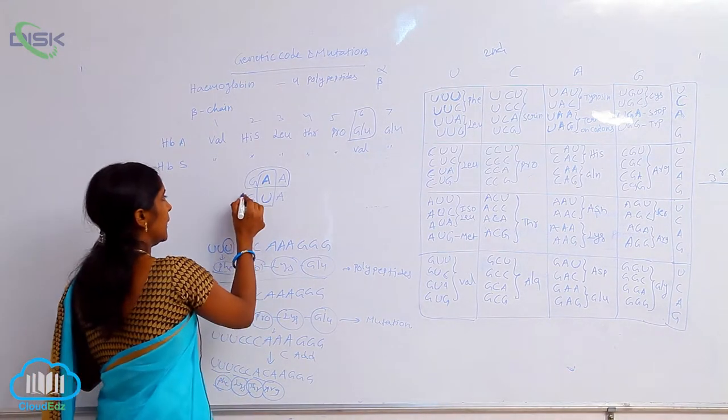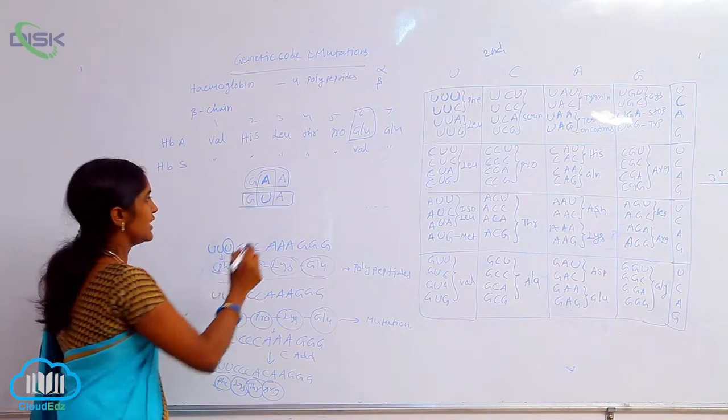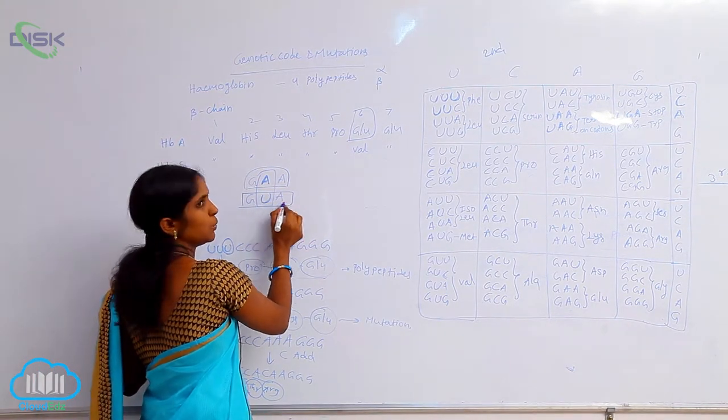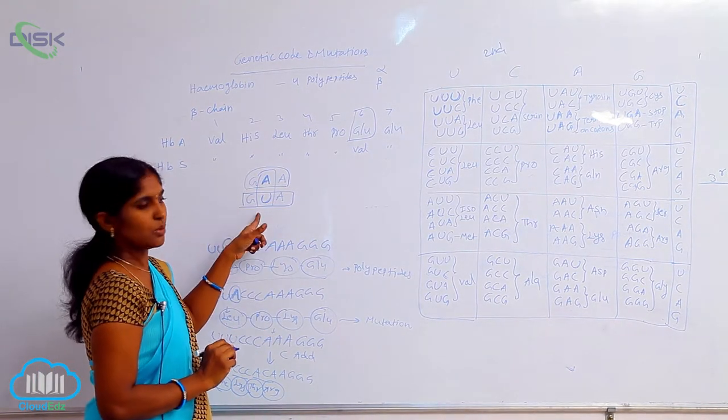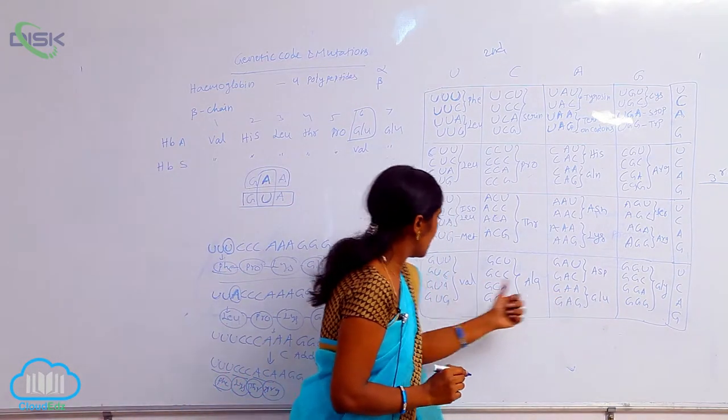Then the codon is changed. It changed as GUA. What does GUA code? GUA codes valine.